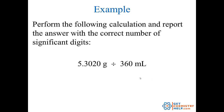Let's do one more example with multiplication and division: 5.3020 divided by 360. I punched that into my calculator and got 0.0147277 repeating. The units are grams divided by milliliters — grams per milliliter. For multiplication and division, we have to figure out what the fewest number of significant digits is.